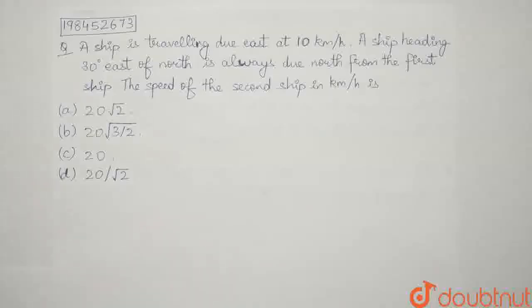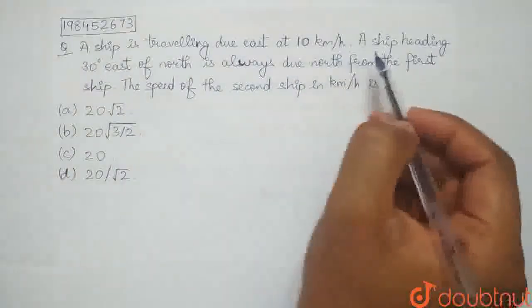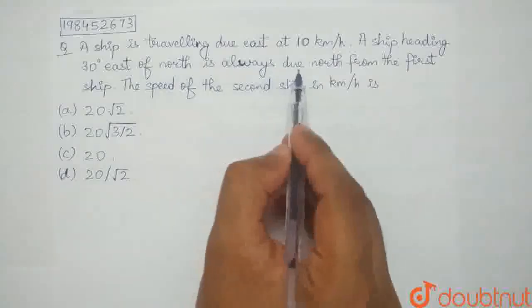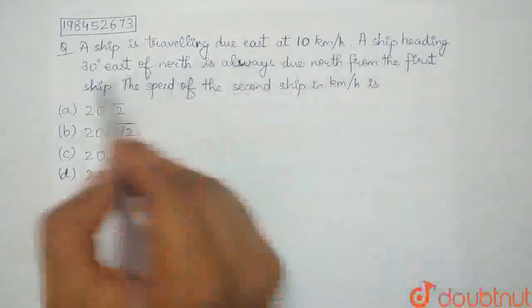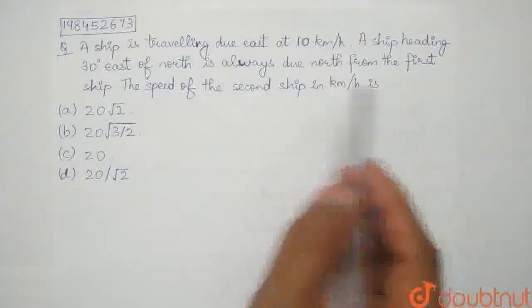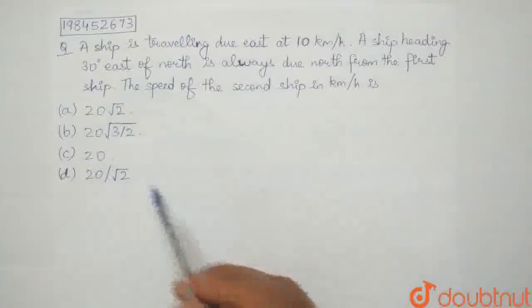Hello friends, our question today is: A ship is travelling due east at 10 km per hour. A ship heading 30 degrees east of north is always due north from the first ship. The speed of the second ship in km per hour is: (a) 20√2, (b) 20√3/2, (c) 20, or (d) 20/√2.